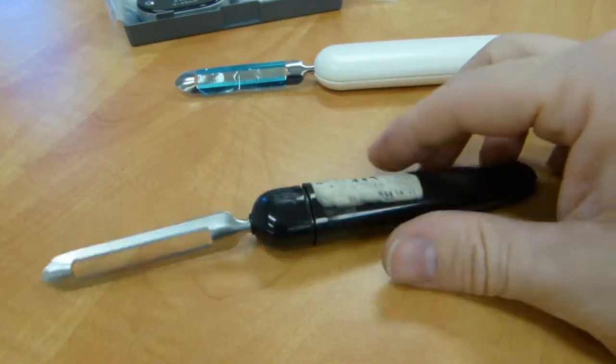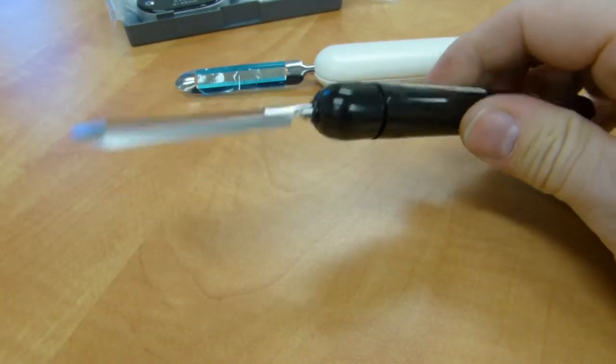This IKEA potato peeler or vegetable peeler almost works, but it doesn't.